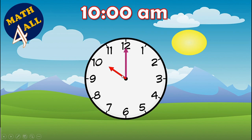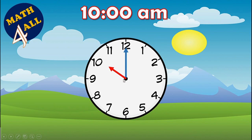Now, what is the time? It's ten AM — ten o'clock — because the long hand is on twelve and the short hand is on ten. Now imagine the long hand will move. What happens? Each number on the clock equals five minutes. The long hand is for minutes, so as it moves we skip count by five.